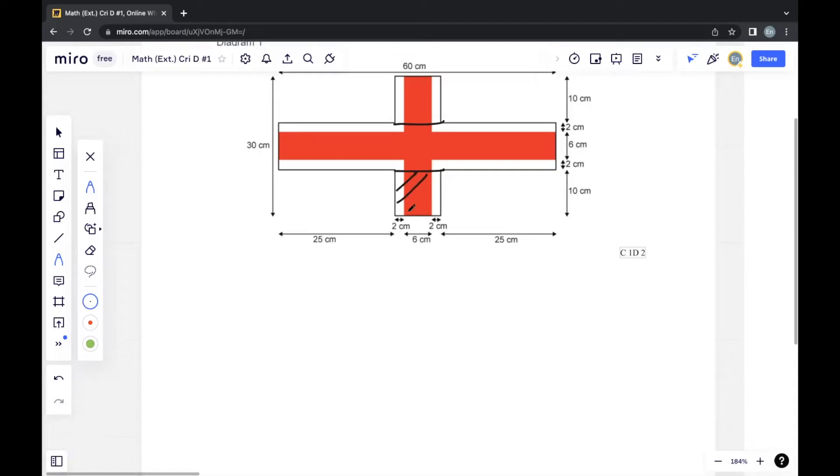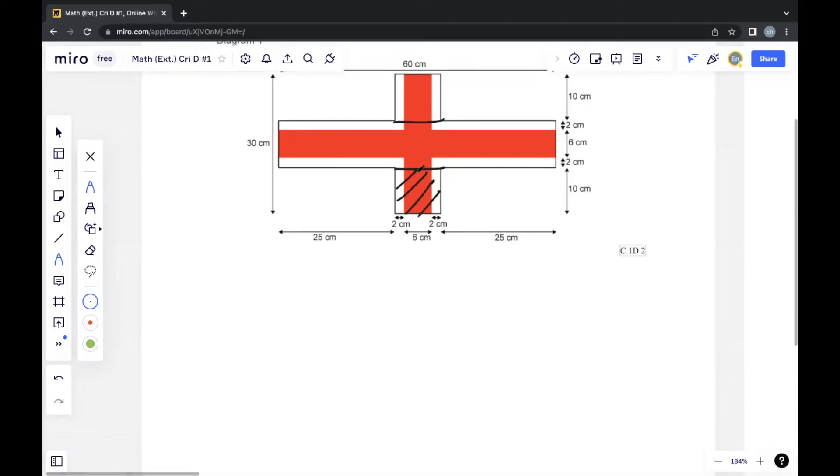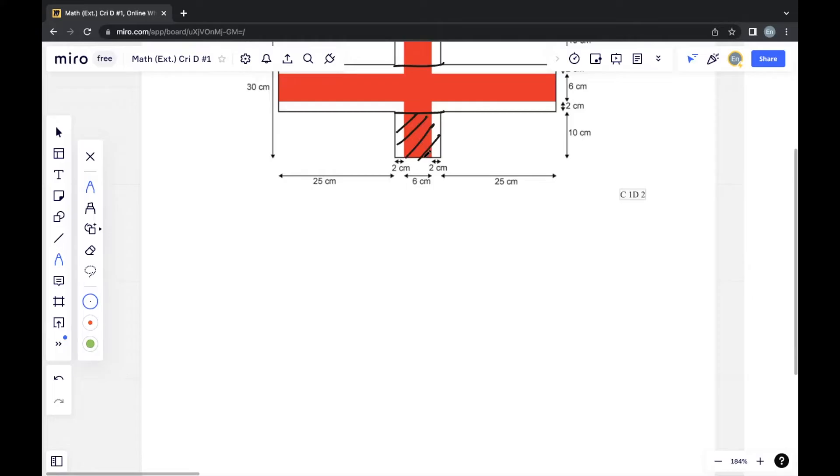Starting with this rectangle, we can calculate the length and width first. The length is 10 cm, and we multiply it by the width, which is down here. They give us 2, 6, and another 2 cm, so adding them equals the width. 6 plus 2 plus 2 is 10, and 10 times 10 is 100.